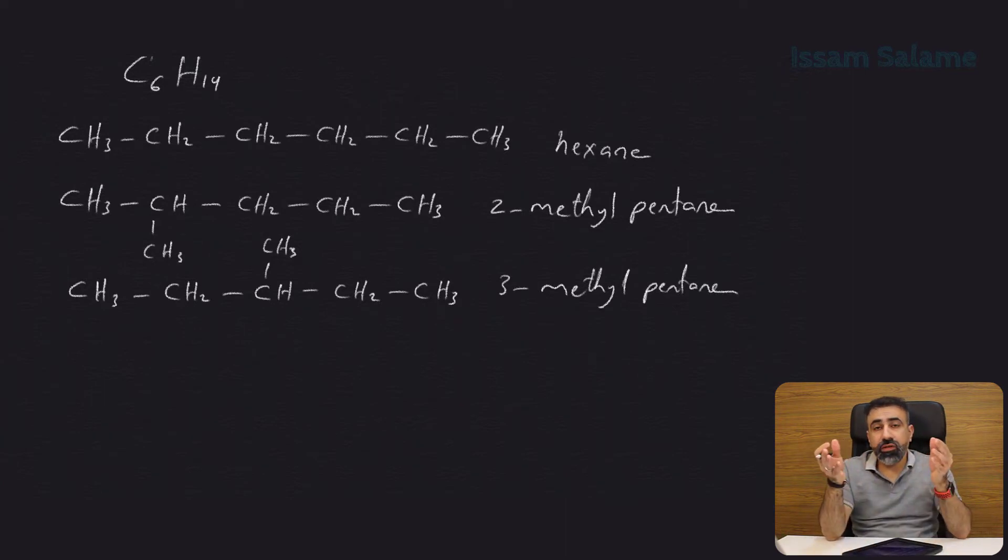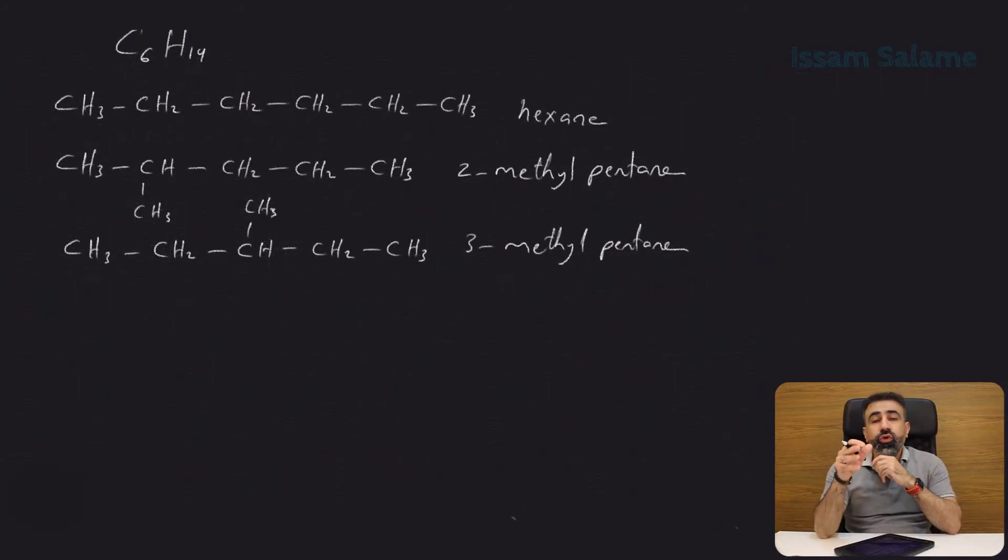As you noticed, nothing is wrong if I join the methyl above the chain or below the chain—they're all the same because these bonds are rotating. What if we draw four carbon atoms as the main chain and try to add the two carbons as groups?